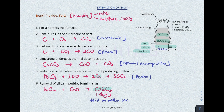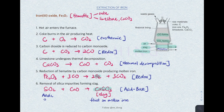The next one — reduction of hematite by carbon monoxide — is also a redox reaction. Last one: the reaction between silicon dioxide and calcium oxide is an example of an acid-base reaction. Why? Silicon dioxide is a non-metal oxide — non-metal oxides are acidic oxides. Calcium oxide is a metal oxide — metal oxides are basic oxides. Acid + base, so this is an acid-base reaction.